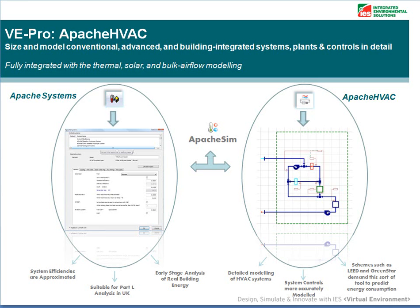Later in the design process, you will need to model your plant in more detail, as the nature of contracts change to include a penalty if the building exceeds its predicted energy figure. There is more demand for Apache HVAC to produce that more accurate energy figure. Also, schemes such as LEED and GREENSTAR demand this sort of tool to predict energy consumption for systems and equipment in more detail than what Apache Systems can provide.